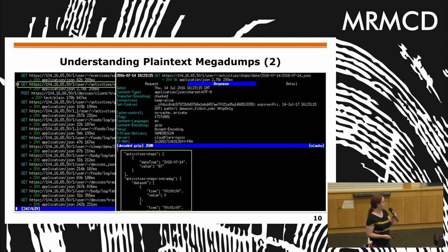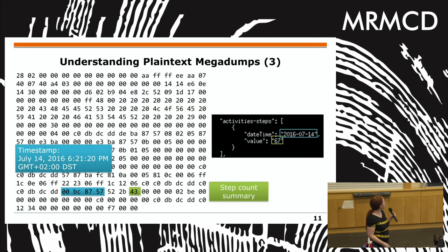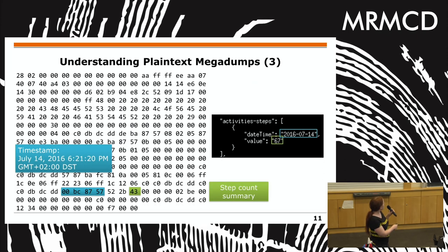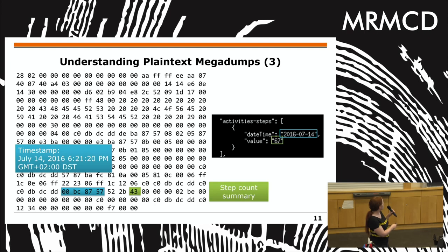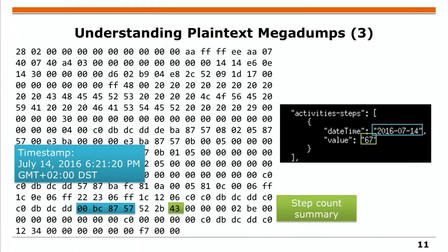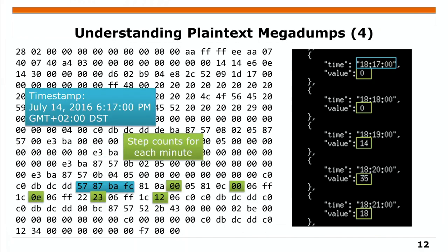For example, after the last timestamp there are summaries including a step count summary. 0x43 hex equals 67 decimal — we could match this between the binary dump and the JSON. Continuing with the step count: we found the timestamp matching the JSON, then no activity for two minutes, then 14 steps, 35, 18, and so on — matching the same pattern. There are some other bytes in between, but each four bytes there is a step count. This was the basis for understanding the protocol — part by part you can reverse engineer just by sniffing.